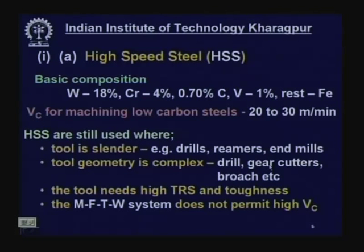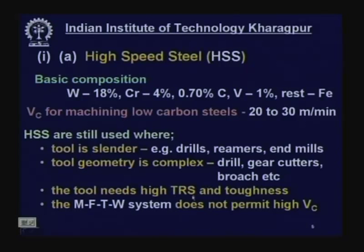Form tools are also made of high speed steel. When the tool needs high transverse rupture strength, bending strength, and toughness — such as in intermittent or interrupted cutting with shock loads — modern cutting tool materials like carbides and ceramics, which are basically brittle, cannot tolerate such conditions. Also, where the machine-fixture-tool-work system is not rigid enough and velocity cannot be raised very high, high speed steel is the best cutting tool material.